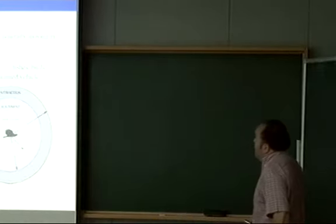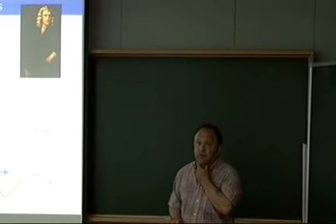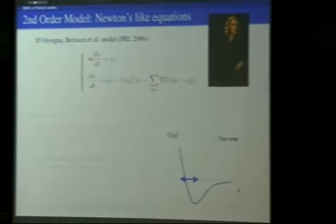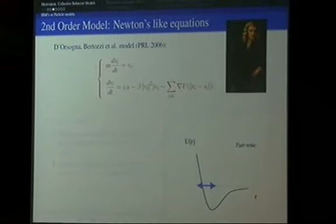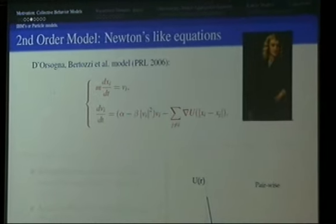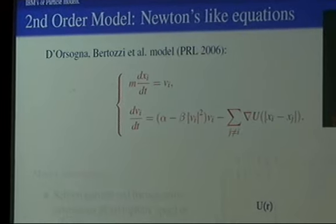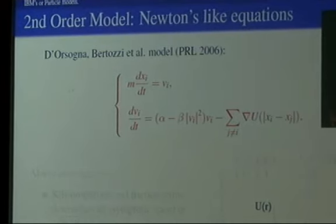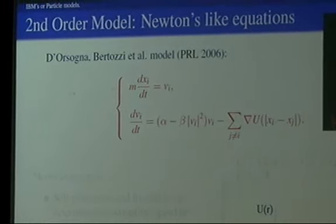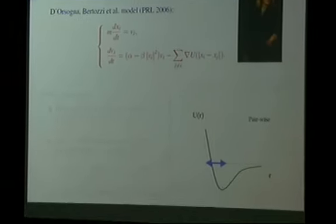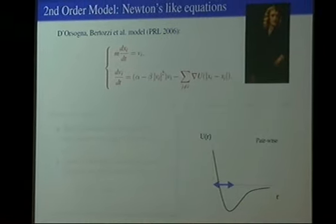Thank you for the question. Let me present a couple of models in this direction that have been proposed recently. The first one is what I call a second-order model, to make a difference with respect to the first-order model I'll present in the next slide. From the kinetic theory point of view, this is a particle method or particle system. In this community, they call these things individual-based models — IBM models, as you see in the literature.